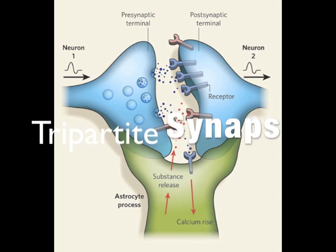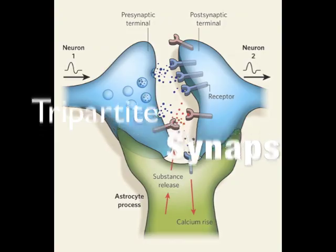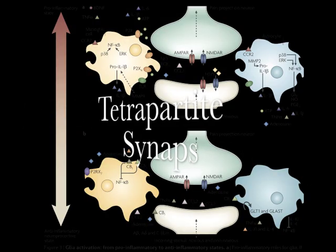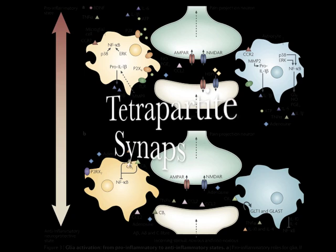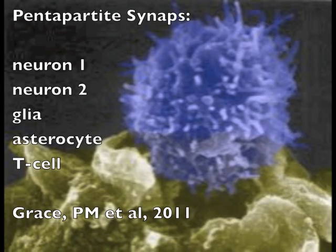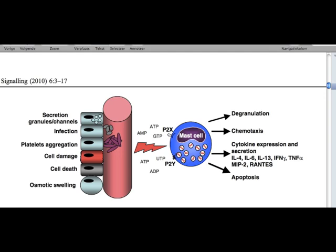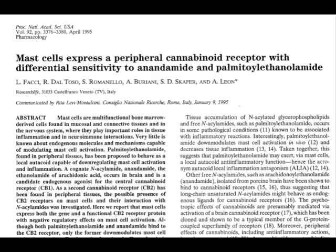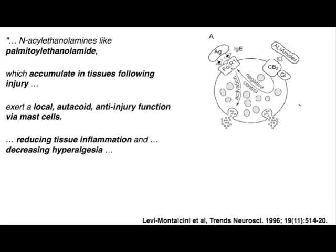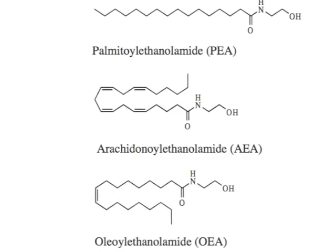More and more evidence is gathering that the synapse is much more complicated than we thought, and many neurobiome cells influence the synapse — not only the glial and astrocytes but also the mast cells. Here we have the pentapartite synapse, with five cells influencing it. It all began with the mast cell and the influence of palmitoylethanolamide, an endogenous cannabinoid, on the mast cells, leading to mast cell stabilization — a finding of Levi-Montalcini, Nobel Prize Laureate. In various experiments, Montalcini's group made clear that the mast cell can be stabilized by palmitoylethanolamide, an endocannabinoid.